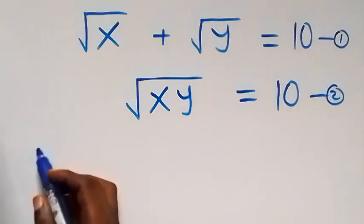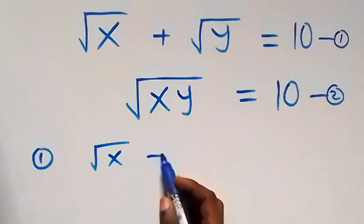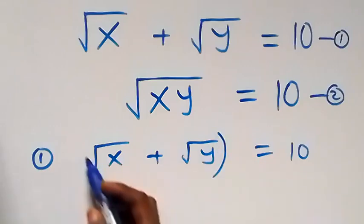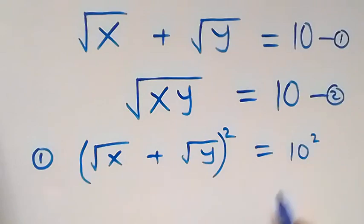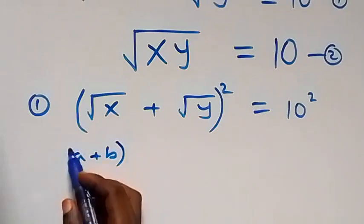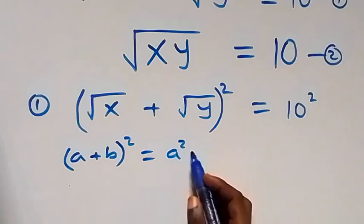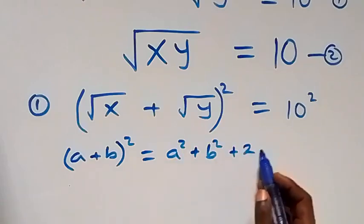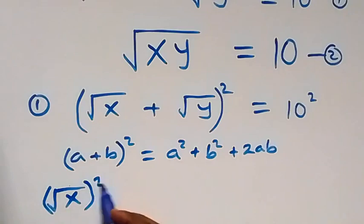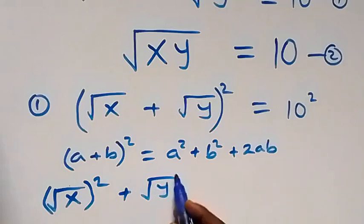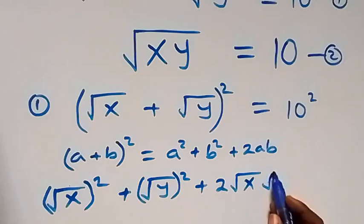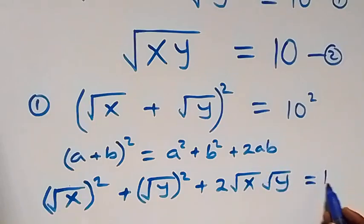From equation 1 we have √x + √y = 10. From here, let's square both sides. The expansion follows from (a + b)² = a² + b² + 2ab, so this becomes (√x)² + (√y)² + 2·√x·√y = 10², which equals 100.